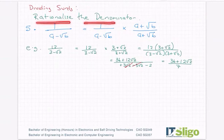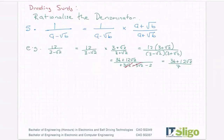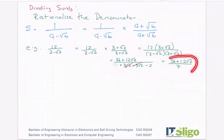To rationalize the denominator: instead of it being a division like 12 over (3 minus root 2), it ends up being a multiplication where you figure out what needs to be on the bottom. Because that's 3 minus root 2, it has to be 3 plus root 2, so that the surds cancel. Then you must multiply the top by the same thing. The surds on the bottom cancel, and you are left with just a rational number on the bottom and a surd on the top.